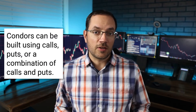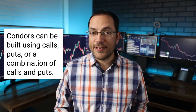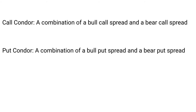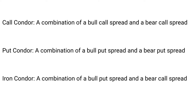A condor can be built using calls, puts, or a combination of calls and puts. A call condor is a combination of a bull call spread and a bear call spread on the same stock. A put condor is a combination of a bull put spread and a bear put spread on the same stock. An iron condor is a combination of a bull put spread and a bear call spread on the same stock.